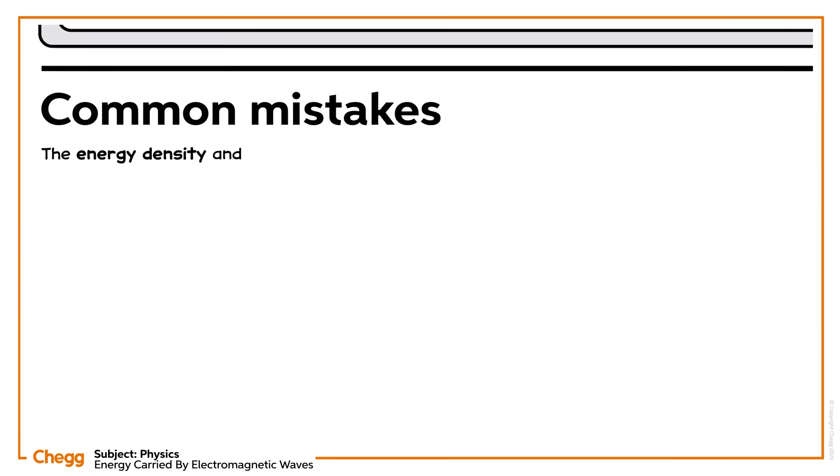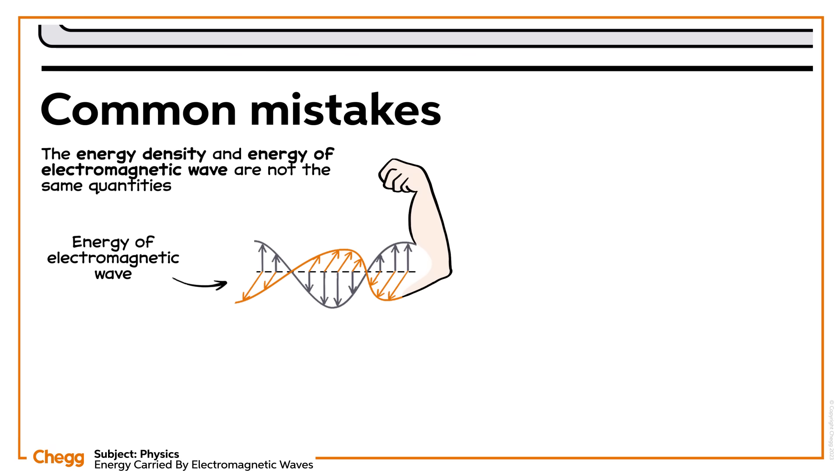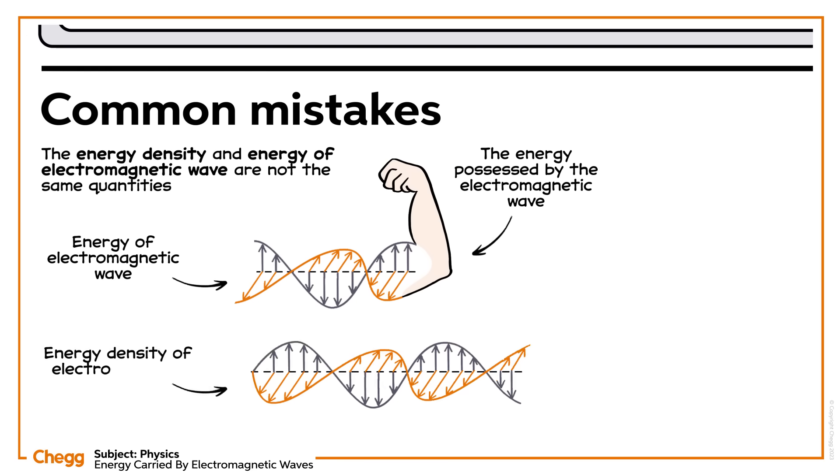The energy density and energy of an electromagnetic wave are not the same quantities. The energy of an electromagnetic wave is regarded as the energy possessed by the electromagnetic wave, whereas the energy density of the electromagnetic wave is the energy per unit volume.